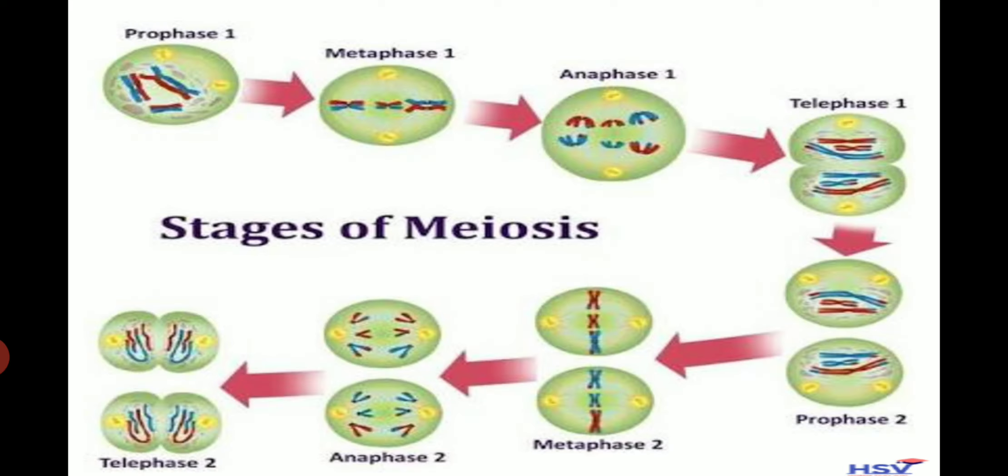Then meiosis. It is a process of reproduction which occurs in higher animals including man. Meiosis has two stages: meiosis one and meiosis two.